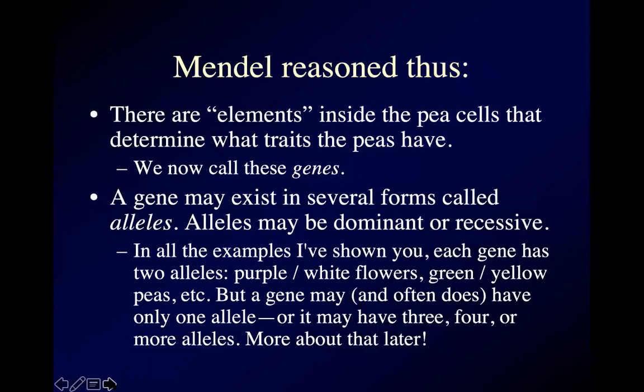A gene may exist in more than one form, and different forms of the same gene are called alleles. An allele may be dominant or recessive. There are some other possibilities, but for right now, this will work.